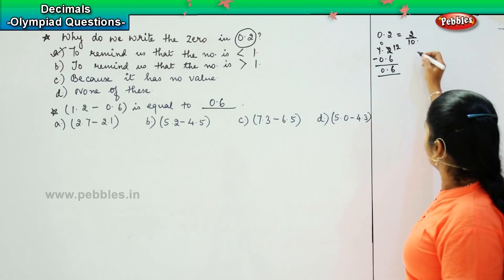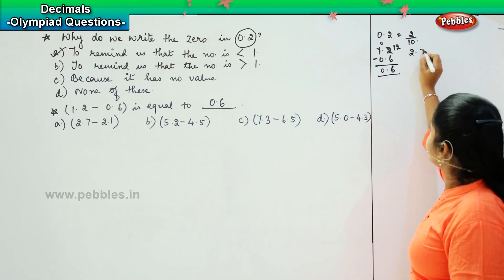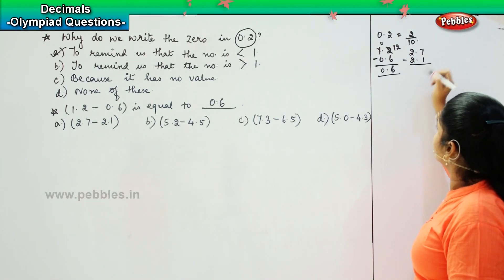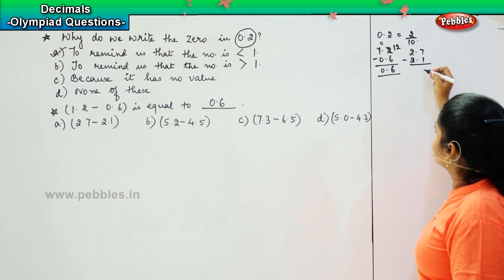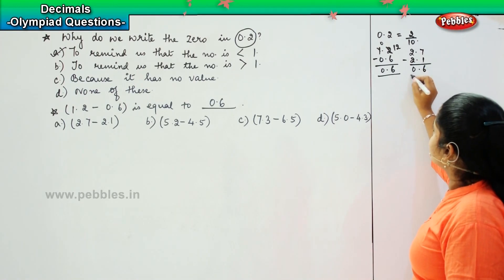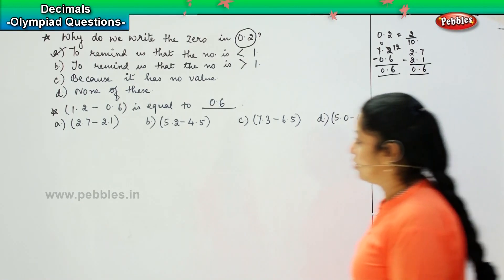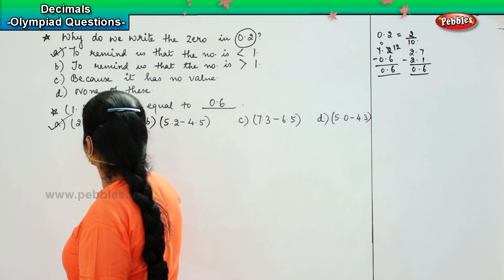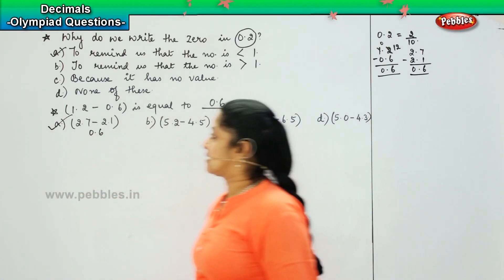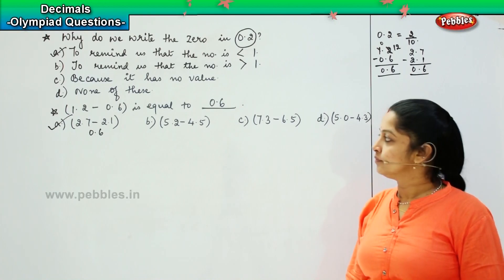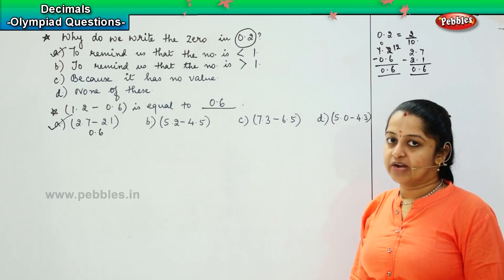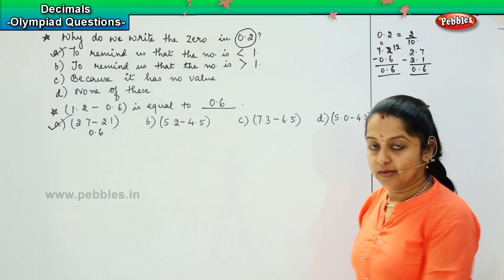Coming to the first option: 2.7 minus 2.1 — 7 minus 1 is 6, and 2 minus 2 is 0 — so this also has a value of 0.6. The answer is option A.